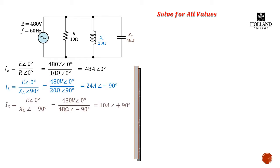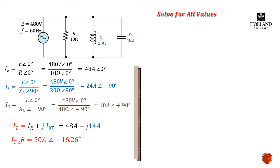By doing that, we'll solve for IR, IL, and IC, which will give us 48 amps at 0 degrees, 24 amps at minus 90 degrees because it's inductive, and 10 amps capacitive, which means it's leading by 90 degrees. When we vector sum these together, there's a difference between the capacitive and the inductive currents of 14 amps. So we add the 48 amps resistive to the 14 amps at plus 90 degrees, and we end up with a result of 50 amps at a lagging angle of 16.26 degrees. Having our current in hand, we can now find our total circuit impedance by taking the total voltage divided by the total current, and that gives us 9.6 ohms at plus 16.26 degrees.